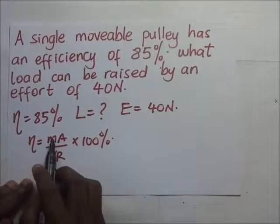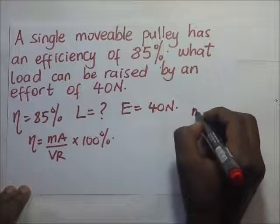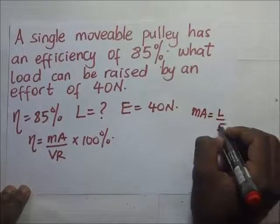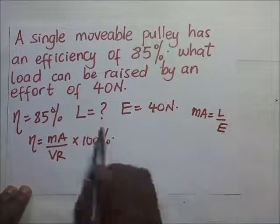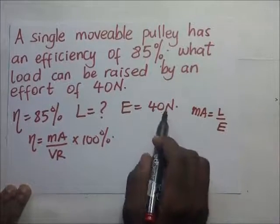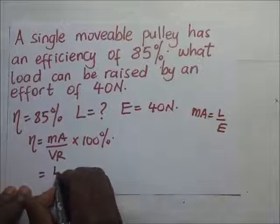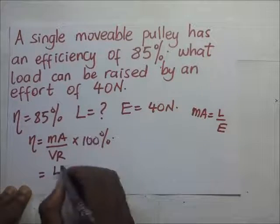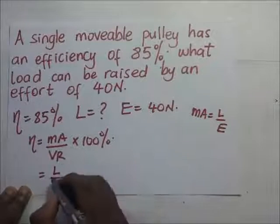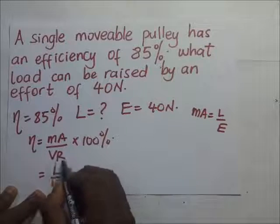Now what is mechanical advantage? We know that mechanical advantage is load over effort. Now we do not have the load, so it's going to be L over the effort, which is 40. So mechanical advantage here is going to be L, which we shall remain as L because it's what we are looking for, divide that by effort, which is 40, so L over 40.